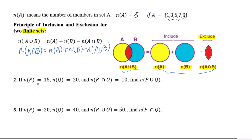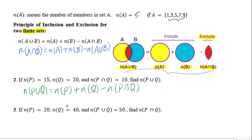Given n(P) equals 15, n(Q) equals 20, and n(P∩Q) equals 10, find n(P∪Q). Using the addition rule: n(P∪Q) equals n(P) plus n(Q) minus n(P∩Q), which equals 15 plus 20 minus 10, equals 25.